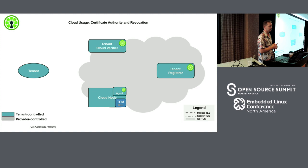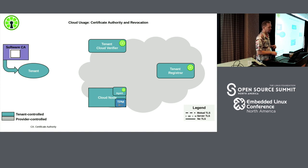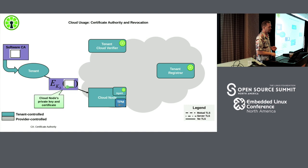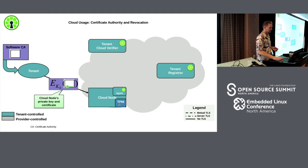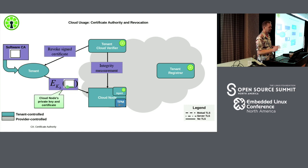One use case is certificate revocation. A certificate authority creates certs and passes them to the tenant. The tenant encrypts the certs with the private half of the boot key and transmits them down to the node. The node has the public boot key, so it decrypts and uses them. The cloud verifier does its integrity measurements, and if something goes wrong, it can communicate to revoke those certificates.